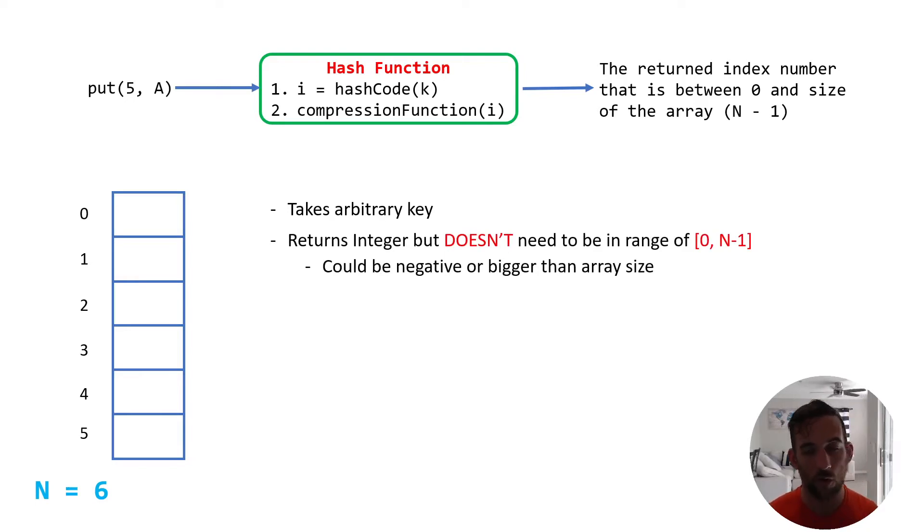Then what happens is that integer doesn't have to be within the range of the array size yet. It could be negative, or it could be bigger than the array size. So right here, the size is 6. If the number, if the index, the integer that just produced is 7, that's bigger than the array size, so it won't be able to be inserted into one of those indexes because it's larger. So you get like an out-of-bounds exception.